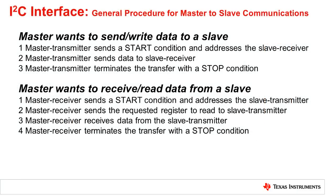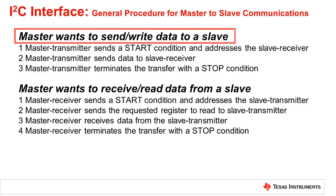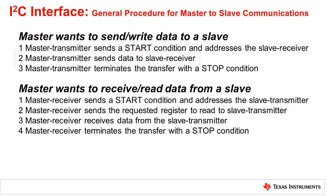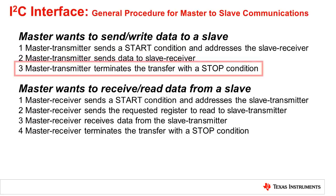Here is the general procedure for master-to-slave communications where the master either writes or reads data from a slave. Here are the steps when a master wants to send or write data to a slave. One, master transmitter sends a start condition and addresses the slave receiver. Two, master transmitter sends data to slave receiver. Three, master transmitter terminates the transfer with a stop condition.